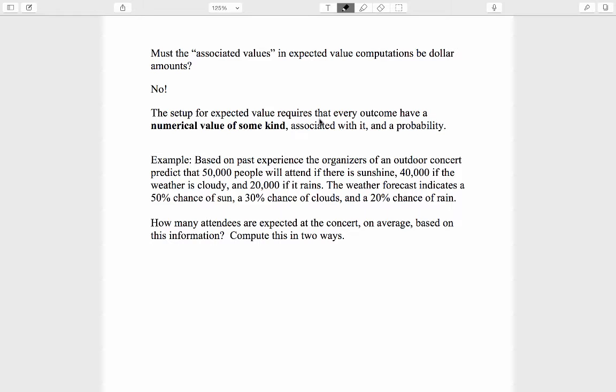Here's an example. Suppose that, based on past experience, the organizers of an outdoor concert predict that 50,000 people will attend if there is sunshine, 40,000 will attend if the weather is cloudy, and 20,000 will attend if it rains. The weather forecast indicates a 50% chance of sun, a 30% chance of clouds, and a 20% chance of rain. The question is: how many attendees are expected at the concert, on average, based on this information? Compute this in two ways.